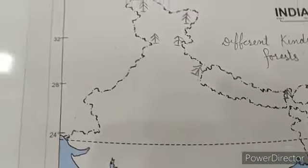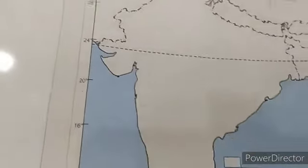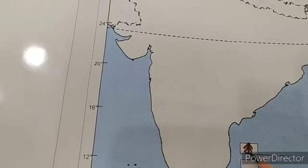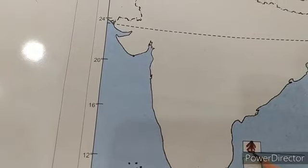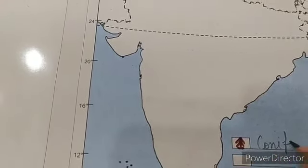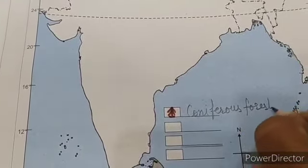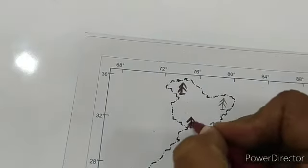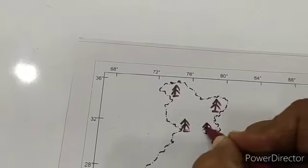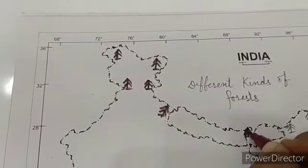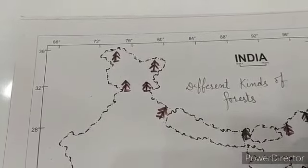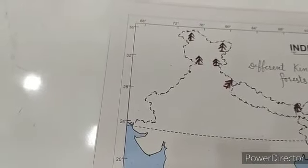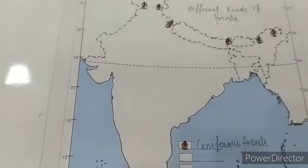In the index, for coniferous forest we will use brown color. By using brown color, you will make the shape of coniferous forest — we are indicating it this way. So you have to write 'coniferous forest' in the index and use brown color there as well. These are coniferous forests or mountain forests, found mostly along the slopes of the Himalayan mountains. In the index, we have shown it clearly.